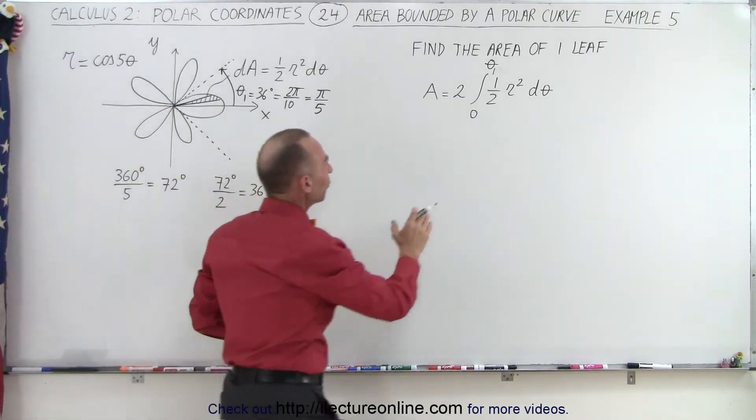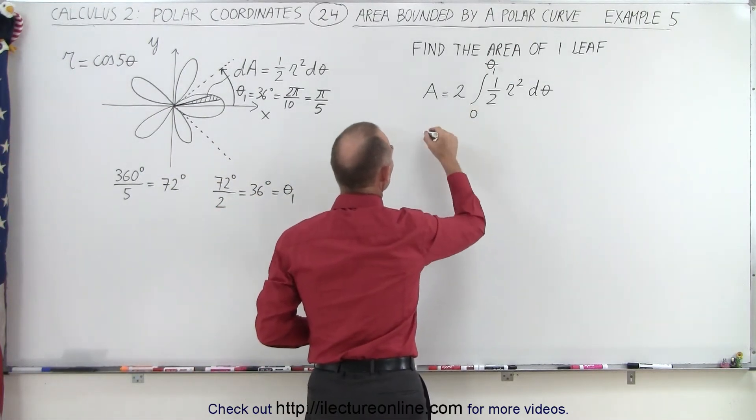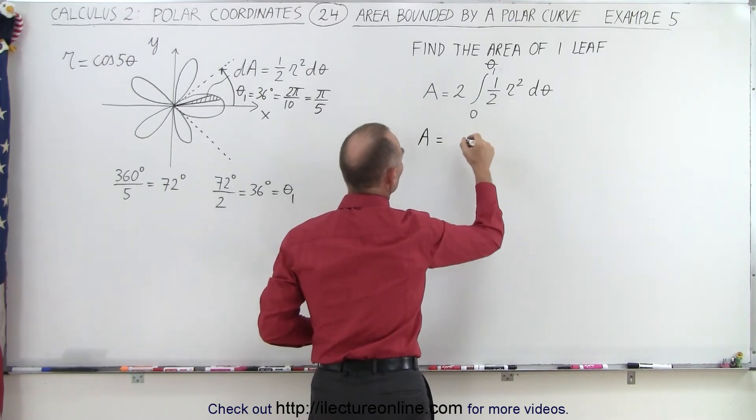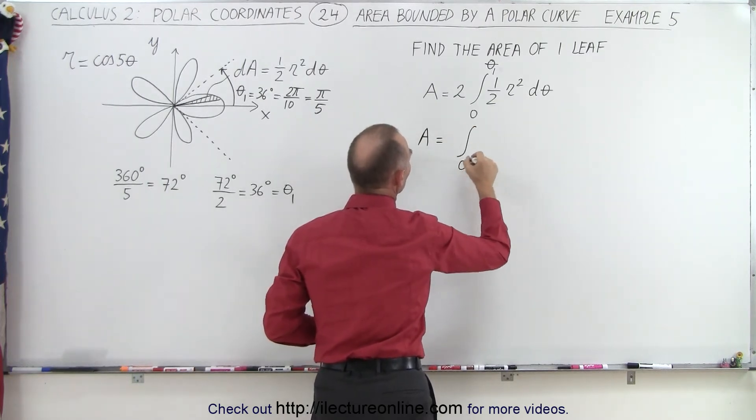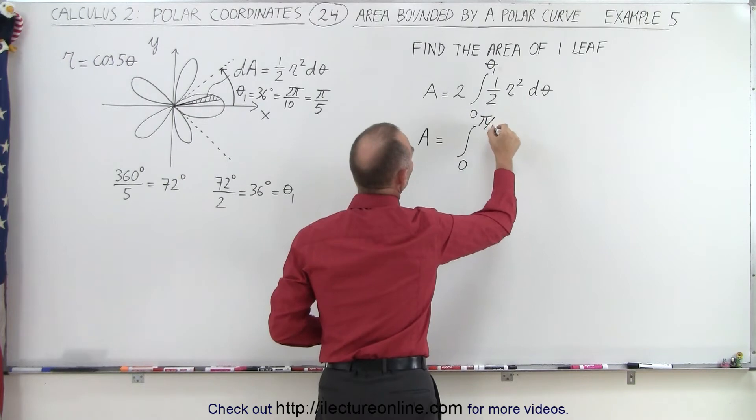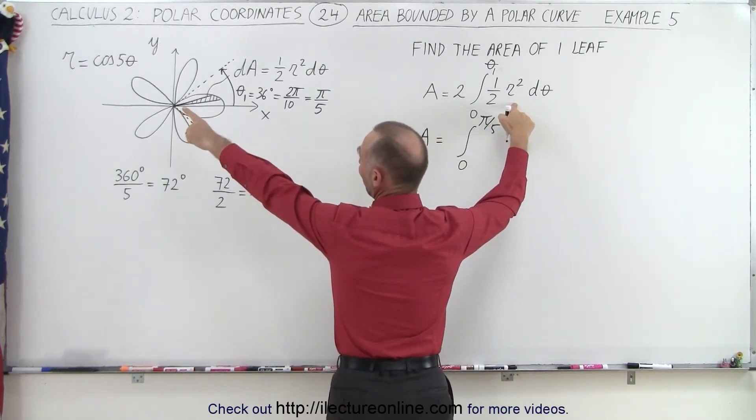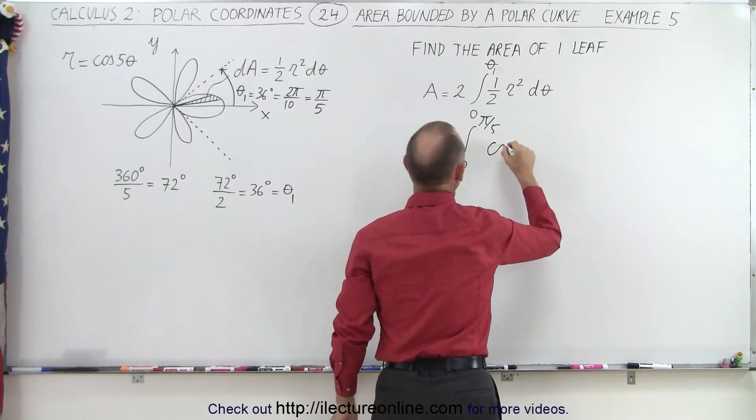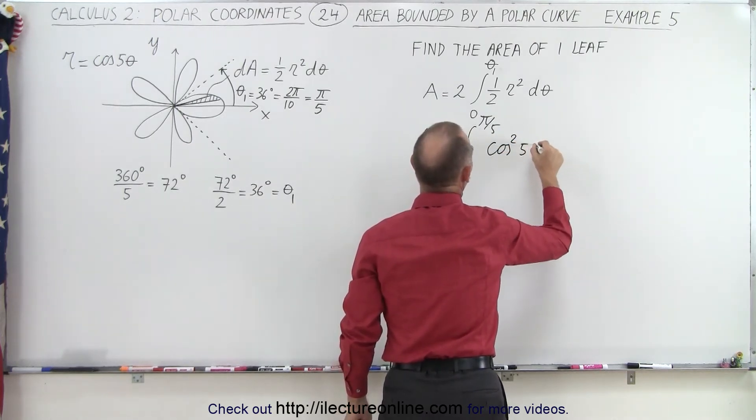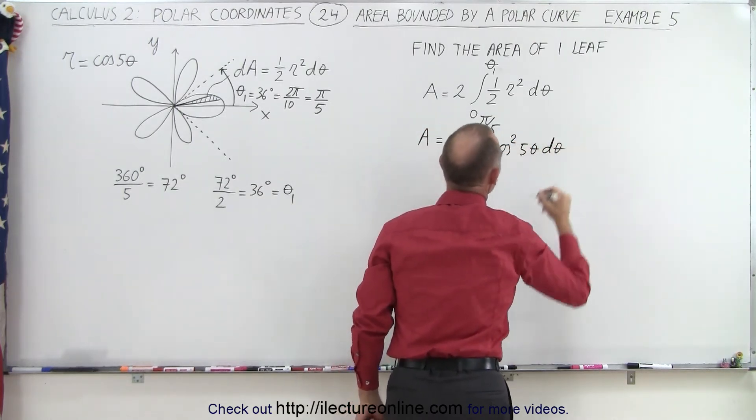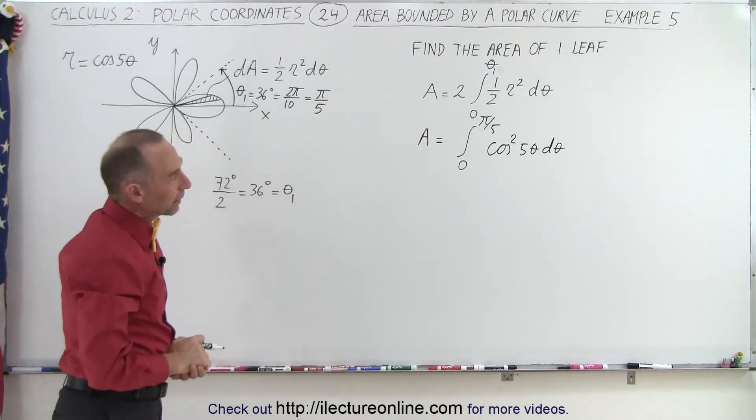Now, integrating this, first we can simplify this a little bit more. We can say the area is equal to one-half times two, which is one, times the integral from zero to pi over five. r squared can now be written as the cosine squared of five theta d theta.